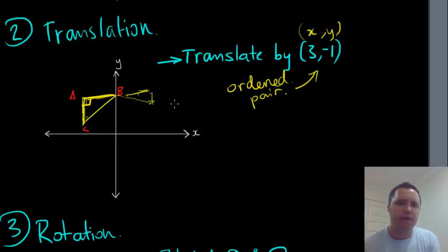So b goes to here and becomes b prime. a comes across this way and becomes a prime. c goes down this way and becomes c prime. And so we end up drawing our new shape having been translated by 3, negative 1. So if you translate a shape and don't do anything else to it, they are congruent shapes.